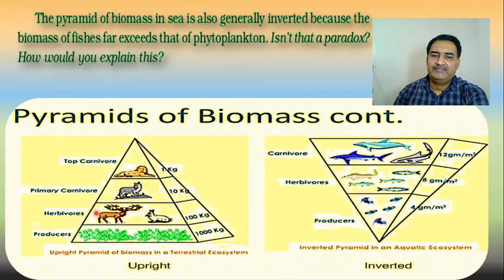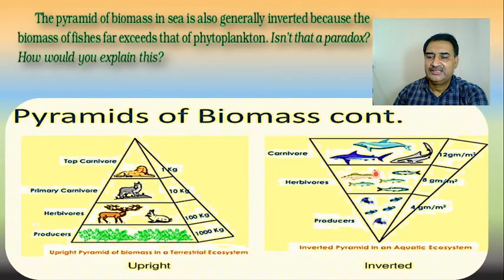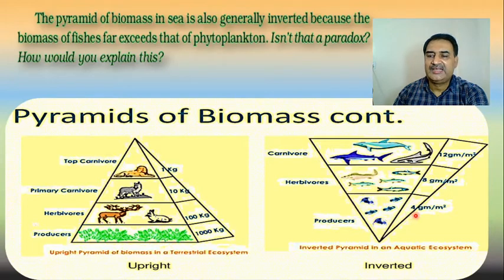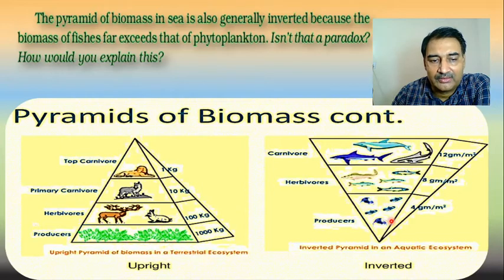Now talking about biomass pyramid — where will the biomass pyramid be inverted? The pyramid of biomass in sea is generally inverted because the biomass of fish far exceeds that of phytoplankton. Here we can see both types of biomass pyramids — upright and downward. Phytoplankton biomass in that ecosystem is less than that of herbivorous fish. Phytoplankton: 4 grams per meter square; herbivorous fish: 8 grams per meter square; carnivorous fish: 120 grams per meter square. So if you construct a pyramid, it will be inverted.